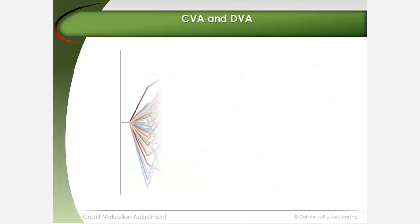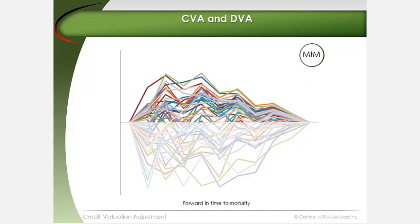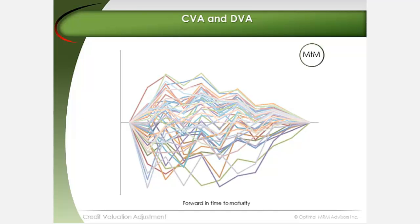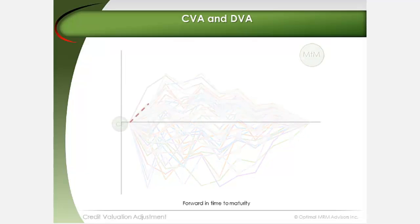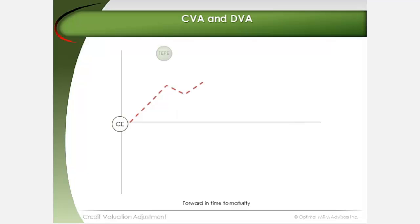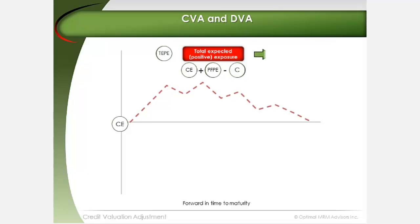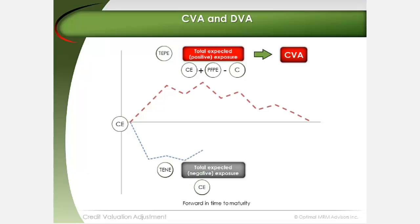Derivative counterparty credit risk exposure is intuitively thought of in terms of positive mark-to-market. There is, of course, the opposite side of the simulation exercise to consider, where the bank or derivatives dealer can be expected to owe the counterparty some mark-to-market in the future — or what is otherwise referred to as negative exposure, or negative mark-to-market. In the same way that a bank's potential positive exposure is used to calculate CVA as a function of the counterparty's risk of credit default, potential negative exposure can be used to calculate a debt valuation adjustment, or DVA, as a function of the bank's own risk of default.